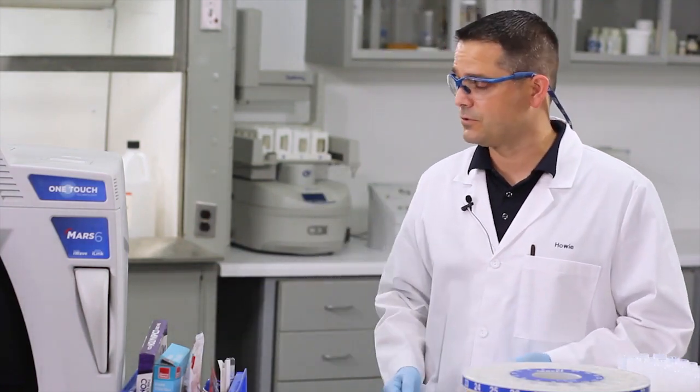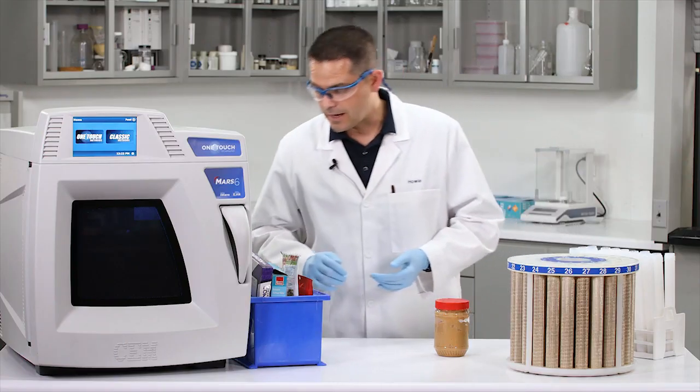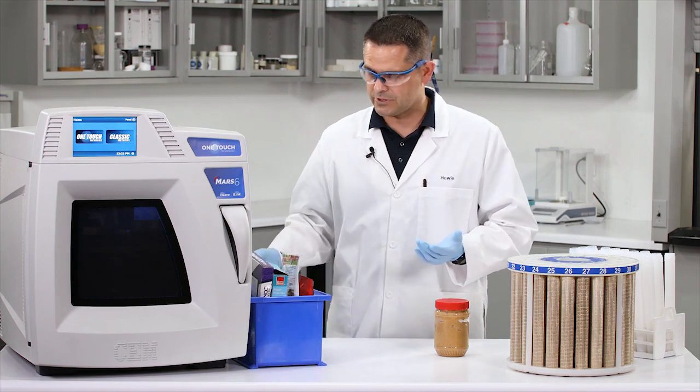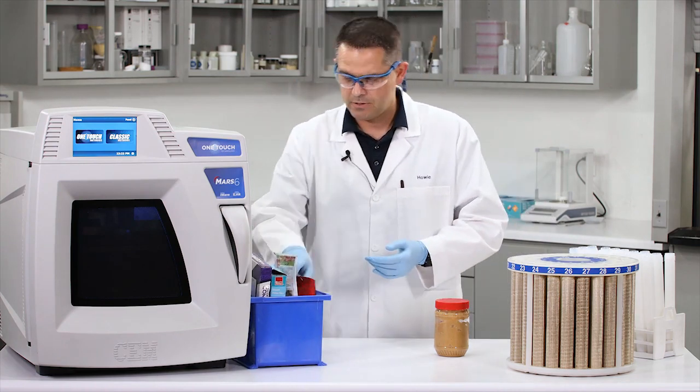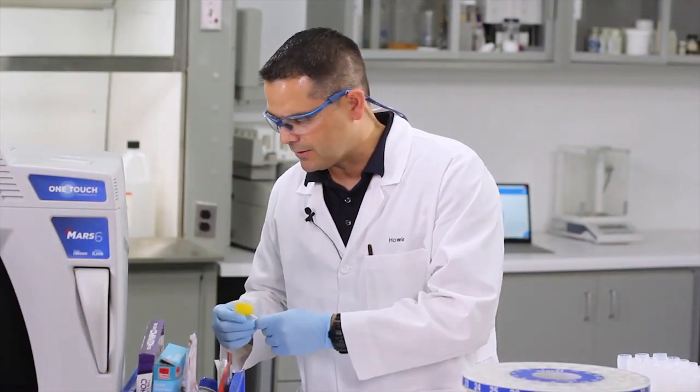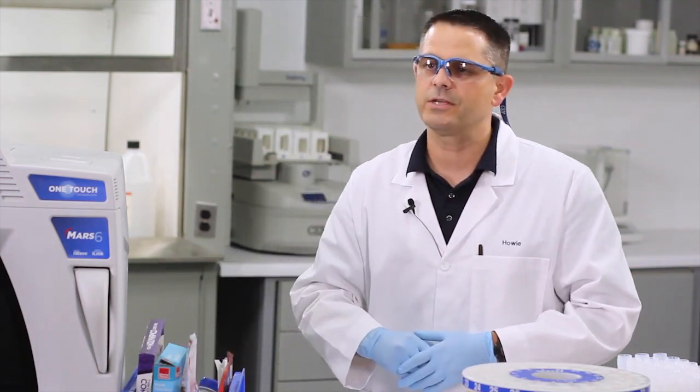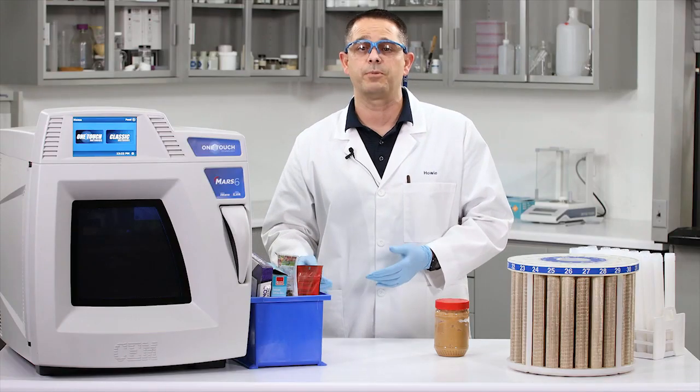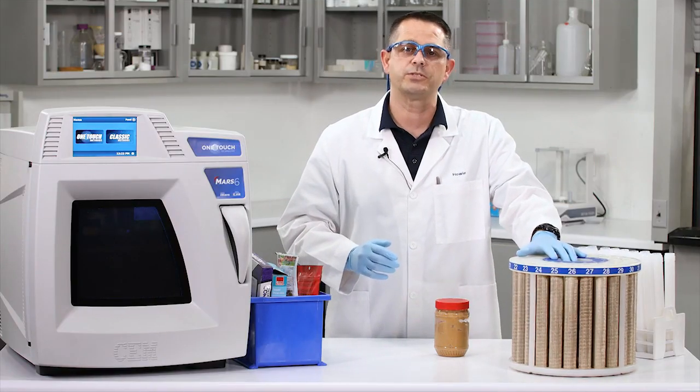First, before we go any further with peanut butter, let's take a look at some of the other foods that we need to digest. These were just brought to me. I've got beef jerky, American cheese, a lollipop, and a bunch of other things in here that we will digest in triplicate. Good thing I've got a 40-position Express vessel set right here.